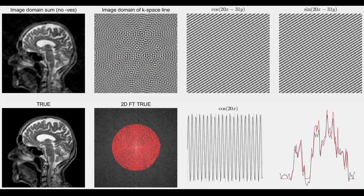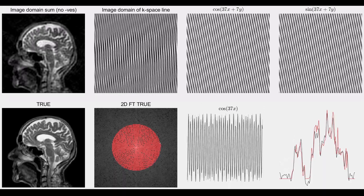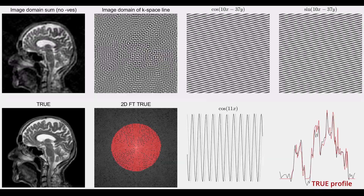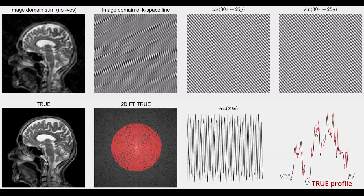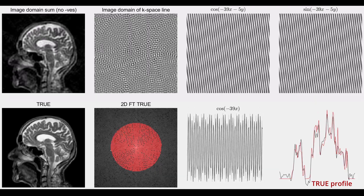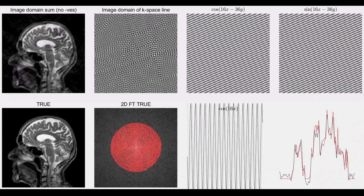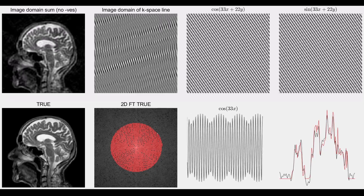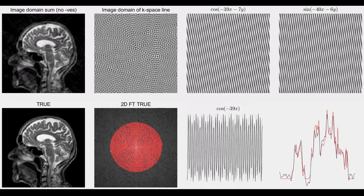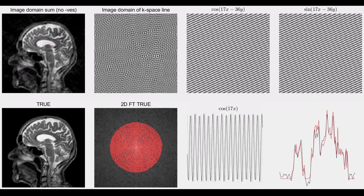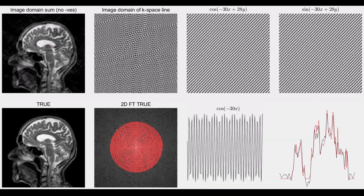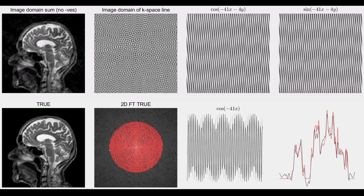I am also showing in the bottom right corner a red profile — that is a profile through the center of the true image shown in the bottom left corner. I'm also showing a black profile, which is the current profile through the top left inverse Fourier transform, which is the inverse Fourier transform of the current red regions that I've considered in the 2D K-space.